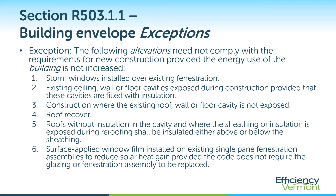There are building envelope exceptions under section R503.1.1. The following alterations need not comply with the requirements for new construction, provided that the energy use of the whole building is not increased. These include storm windows installed over existing windows, existing ceiling, wall, or floor cavities exposed during construction provided those cavities are filled with insulation, any construction where existing assemblies are not exposed, and re-roofing projects. However, roofs without insulation in the cavity where the sheathing or insulation is exposed during re-roofing need to be insulated either above or below the sheathing. There are also exceptions for alterations made to existing single-pane windows.